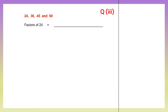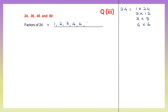Here we have 4 numbers. So let's find the factors of 24: 1 into 24 is 24, 2 twelves are 24, 3 eights are 24, 4 sixes are 24. That's it. So the factors of 24 are 1, 2, 3, 4, 6, 8, 12 and 24.